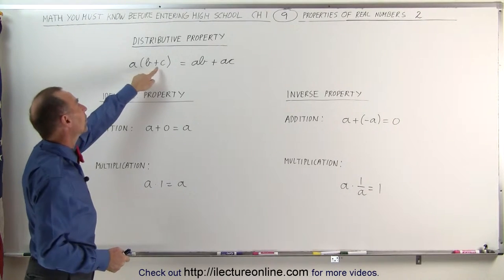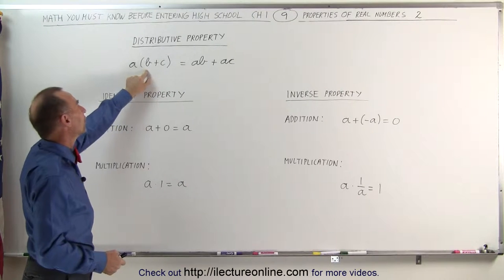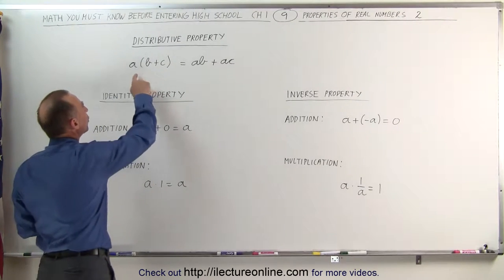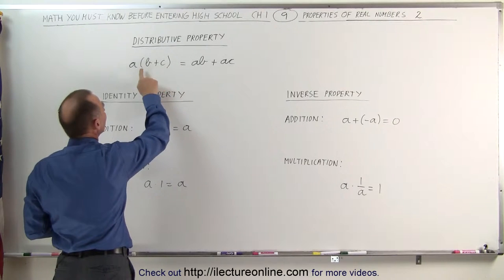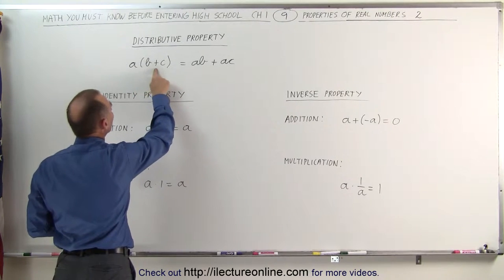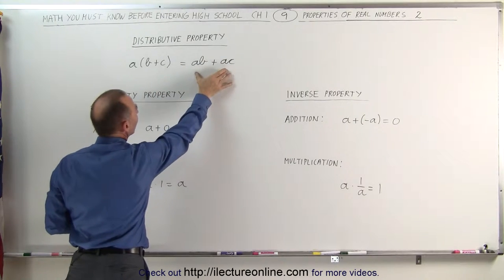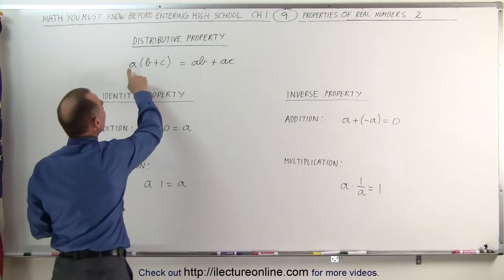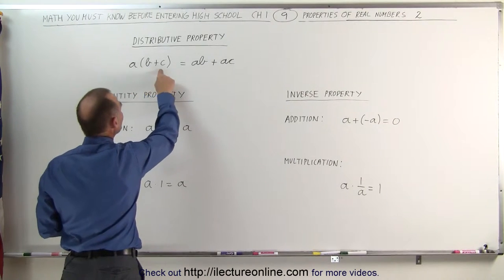Let's say in parentheses we have b plus c, we multiply that times another number, a. A can be distributed over both b and c, which means this equals a times b plus a times c. This is the distributive property - a is distributed over both b and c.